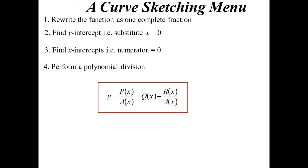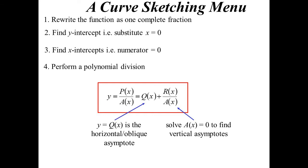And when it's in that form, then the bottom of the fraction, well, that finds the vertical asymptotes. The quotient turns out to be the horizontal or oblique asymptote, depending on what that function turns out to be.